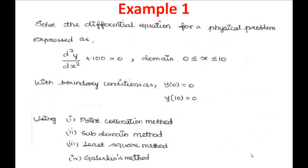Through an example, we will explain how to convert the governing differential equation into a residual function, and then solve it using all four methods. The example problem is: solve the differential equation d²y/dx² + 100 = 0. This equation represents a physical phenomenon — it could be structural, fluid, or electromagnetic.